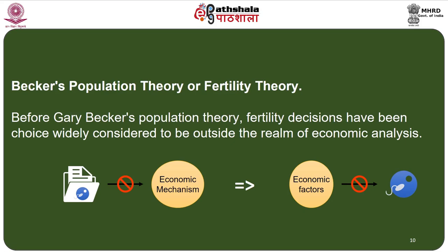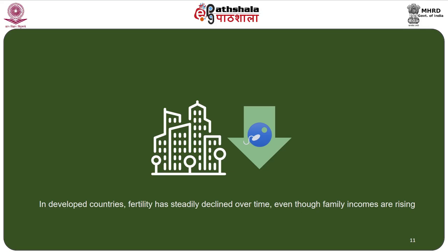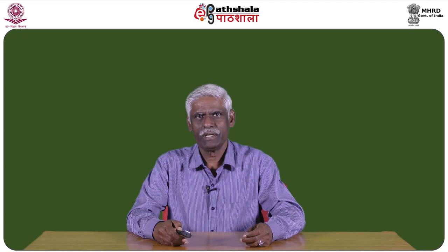Before Gary Becker's population theory, fertility decisions were widely considered to be outside the realm of economic analysis. One reason is that data on fertility had not indicated an economic mechanism. In developed countries, fertility steadily declined over time even though family incomes were rising, and the relationship between family income and fertility was shown to be negative or sometimes very weak.